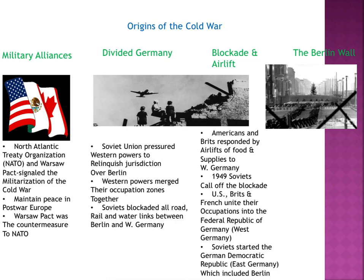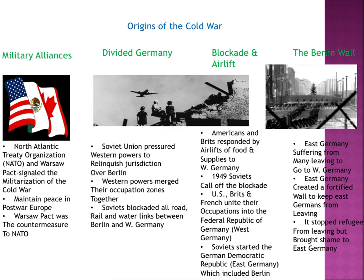The Soviets started the German Democratic Republic known as East Germany, including Berlin. East Germany built a wall because it saw many of its people leaving to the democratic side — the Berlin Wall. The East Germans created a fortified wall to keep Germans from leaving, stopping refugees but bringing shame to East Germany, as it was forcing people to live there, breaking up families, and killing people who tried to escape.